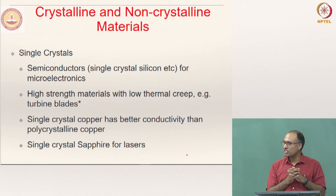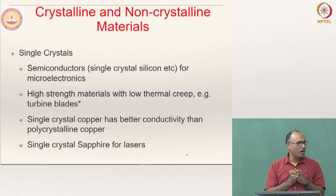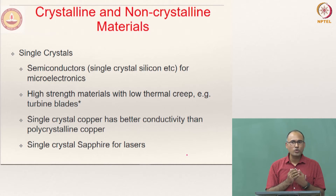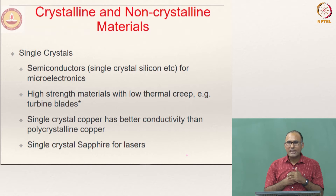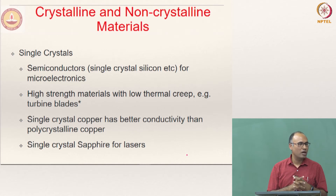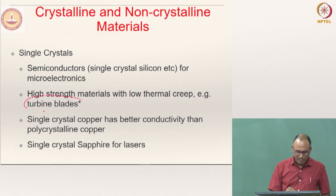For instance, single crystal silicon is used for semiconductor applications. Turbine blades are required to withstand very high temperatures — you want to operate them at high temperatures to increase thermodynamic efficiency. When working at high temperatures, they are subjected to a phenomenon called thermal creep, and you want materials which have high strength at high temperature. That is why turbine blades are usually made of single crystal materials.